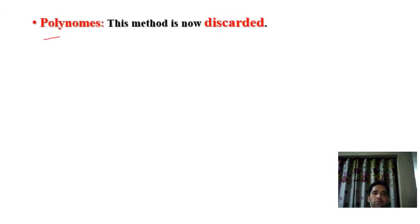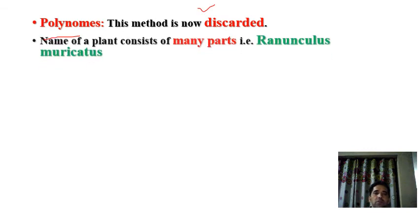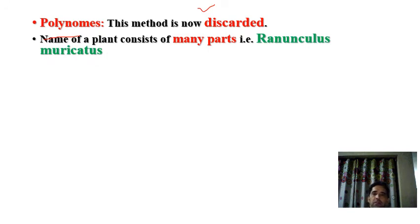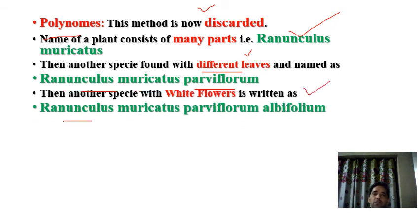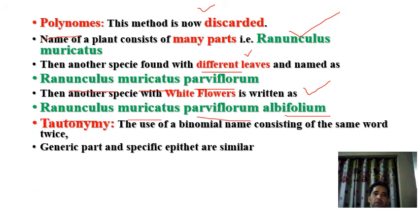Polynomial nomenclature — 'poly' means many, 'nomen' means name. This method is now discarded. In this system, the name of a plant consists of many parts. For example, a plant was named Ranunculus muricatus; another similar plant with different leaves was named Ranunculus muricatus parviflorum; another with white flowers was named Ranunculus muricatus parviflorum albiflorum. As characters were added, the name also increased.